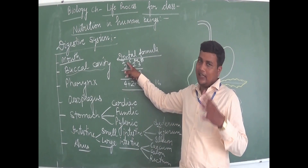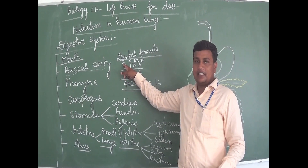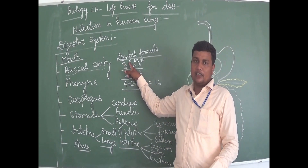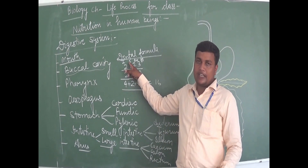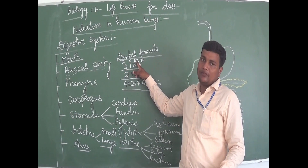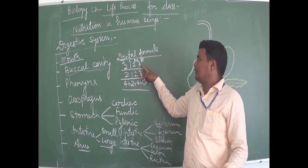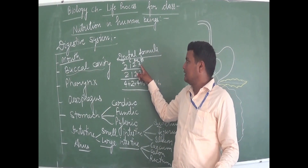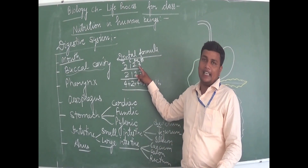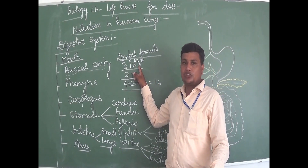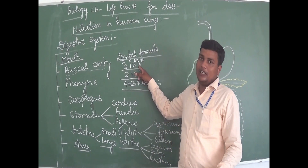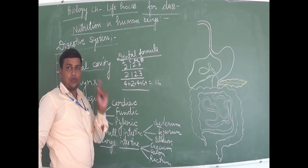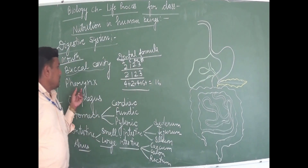Teeth are of four types: incisors are used to cut food particles; canines for tearing; premolars for crushing; and molars for mastication and chewing. So molars and premolars help in the mastication and chewing of food into small parts. The singular of teeth is tooth.